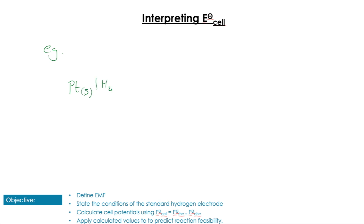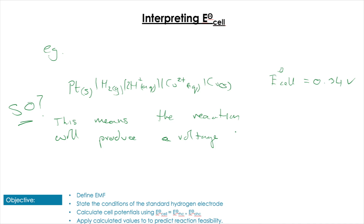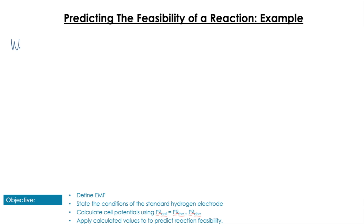So what do these values really mean? If we take a platinum half-cell and connect it to a copper half-cell, the overall predicted E°cell gives us 0.34 volts. This means the reaction is feasible - those cells connected will produce a voltage. We can use this understanding - a positive cell value meaning a feasible reaction - to look at unknown reactions and determine if they will occur.